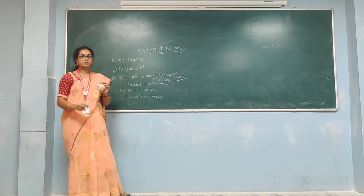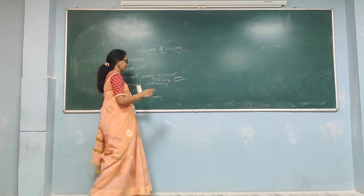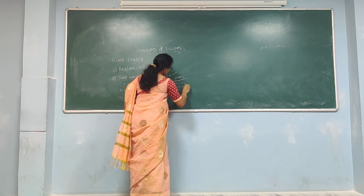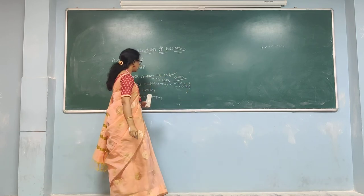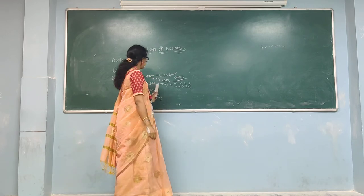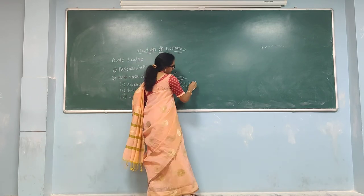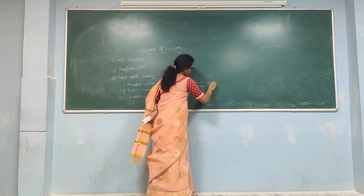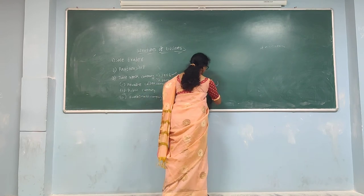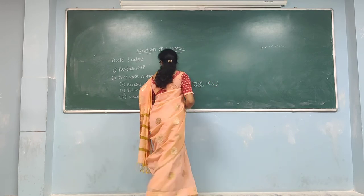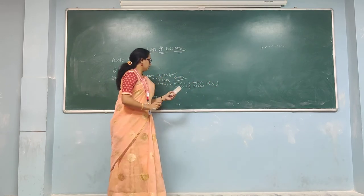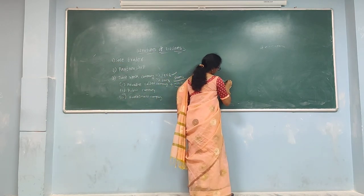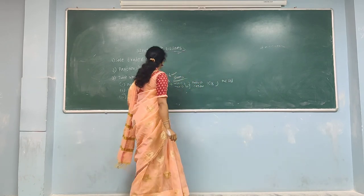Private limited company: minimum two members, maximum fifty members. The minimum paid-up capital is one lakh rupees. When registering a private limited company, you must mention the name with 'Private Limited' in the title.